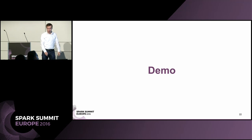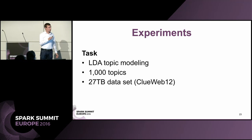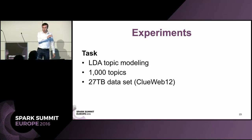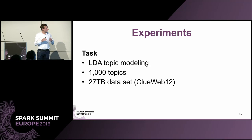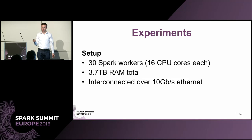Going back to the slides — that's a simple example of how to use Glint for distributed factors and matrices. Now I'll show some experiments. Our task was to implement LDA topic modeling using this parameter server approach with 1,000 topics on 27 terabytes of data — the ClueWeb12 dataset, used in academia for web-related research, containing crawled random web pages. We had a setup of only 30 Spark workers with 16 CPU cores each.